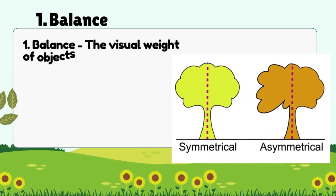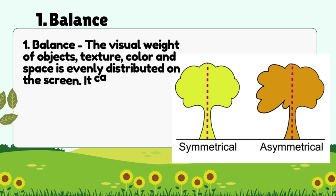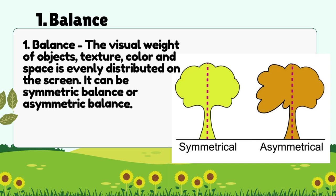1. Balance: The visual weight of objects, texture, color, and space is evenly distributed on the screen. It can be symmetric balance or asymmetric balance.